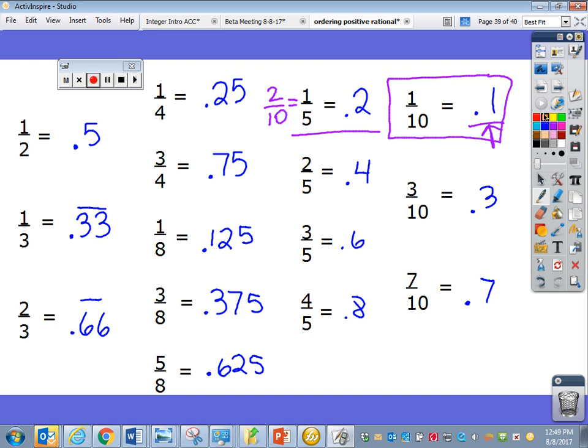A lot of people remember the fourths by thinking about quarters and money. Those are pretty easy. One quarter is 25 cents. Now, 1 eighth is half of 1 fourth. So you can just split 1 fourth in half, or you can do your division with top dog goes in the house.